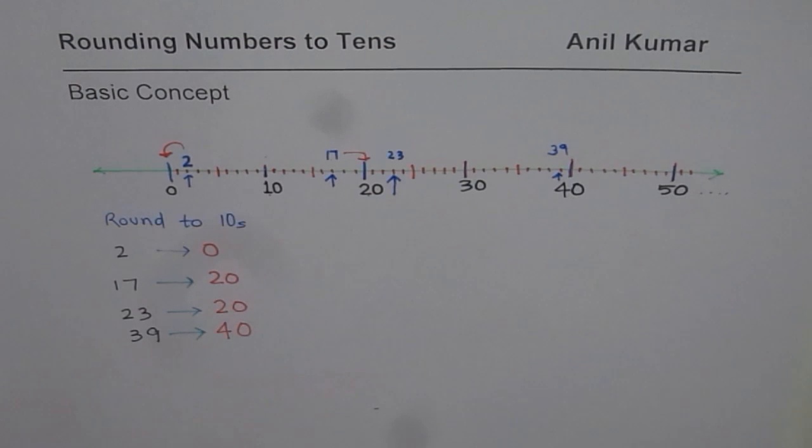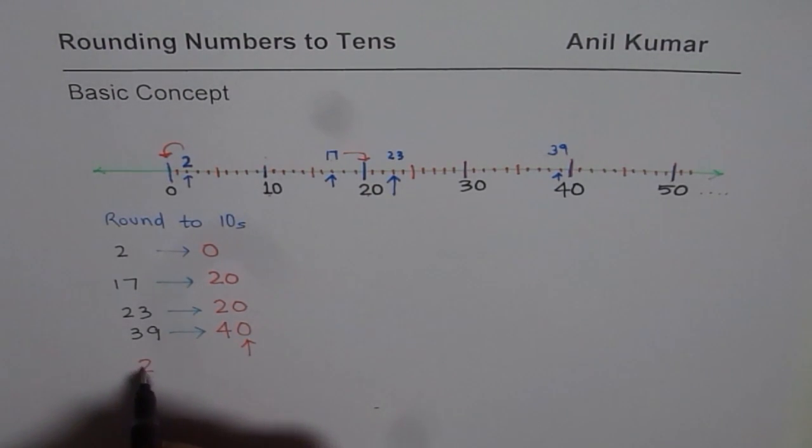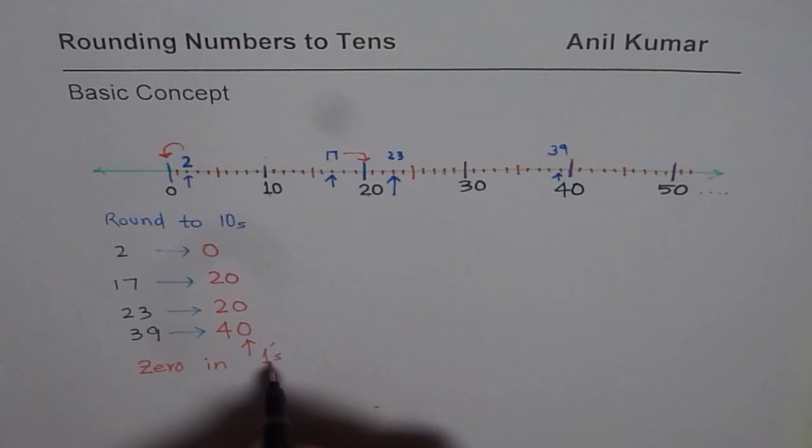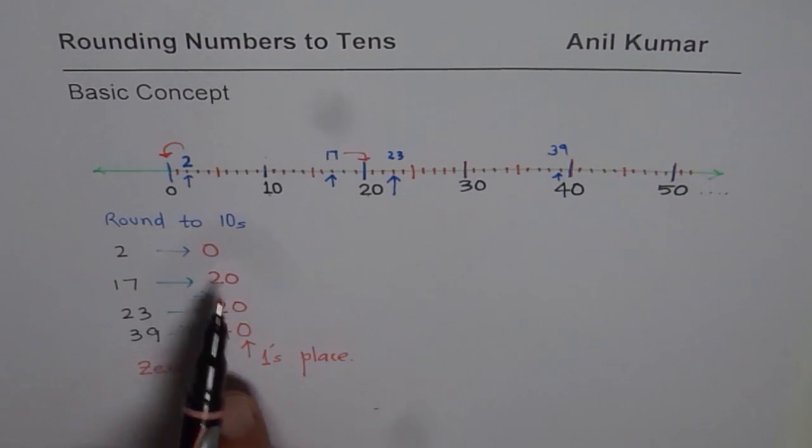So that is how you round. You will notice, after rounding, we get 0 at 1's place. So when you round to 10's, we get 0 at 1's place. So we have 0 in 1's place. So for 0, the place value is 1 in all these examples. So 0 is in 1's place when you round numbers to 10's.